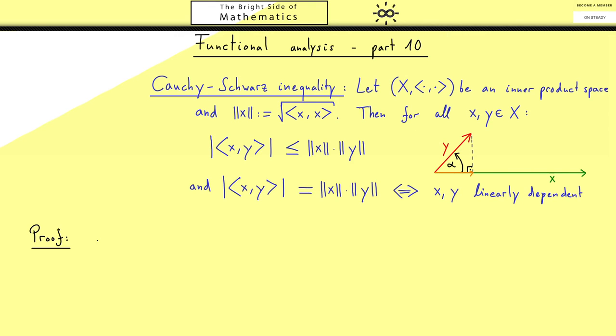Okay, so let's start with an easy case. Let's call it the first case where x is the zero vector. Of course, there we know the left hand side has to be zero. Simply by the linearity we can just pull out the factor zero. And of course the right hand side is also zero because the norm of x has to be zero here. In particular, the general inequality is obviously fulfilled for this simple case.